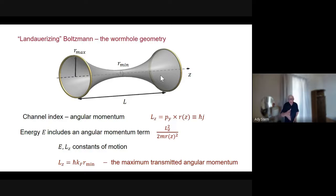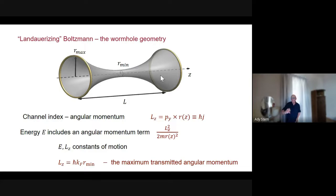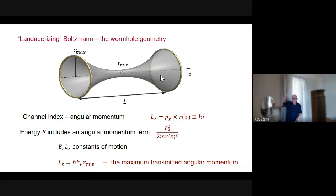As you move in the z direction and r gets smaller, p_y gets bigger and your azimuthal velocity increases. The kinetic energy spent moving around in circles increases as r decreases. If at some point that energy equals your total kinetic energy, you're reflected back — you don't have enough energy to keep both angular momentum and energy fixed while moving into a narrower region. That's the classical mechanism for reflection here.